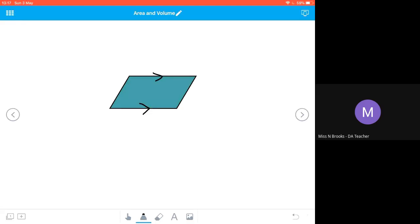So the parallel edges on the top and the bottom are marked with a single arrow, and then we have a double arrow for the other pair of parallel sides.